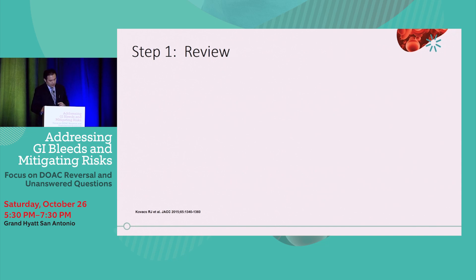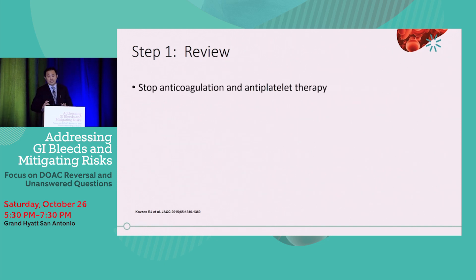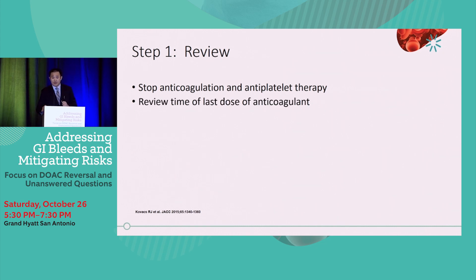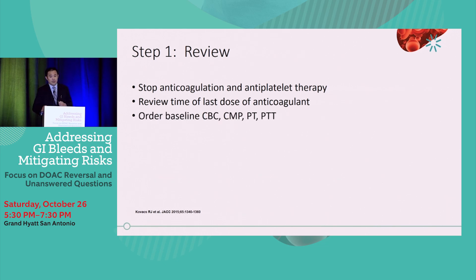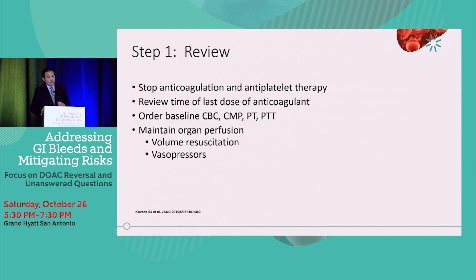Our approach in the emergency department for treating a patient experiencing a DOAC-related bleed is as follows. Step one: Review. First, stop the anticoagulation and antiplatelet therapy. Review the time of last dose — this is probably the most critical piece of information, as it affects our decision to administer a reversal agent and approximates the amount of DOAC still present. Order a baseline CBC, CMP, and coagulation profile, and maintain organ perfusion with volume resuscitation — blood transfusion, normal saline, and potentially vasopressors.